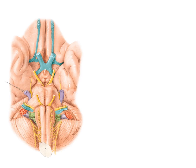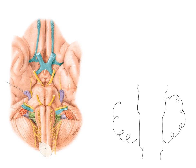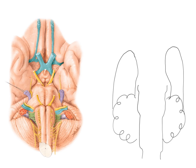The next thing we're going to do is draw a schematic outline of the image on the left to make this more memorable. I'm going to be drawing the spinal cord, the medulla, the pons, and the midbrain. Here is the cerebellum, here are the temporal lobes of the brain, and here are the frontal lobes. This is cartoonish, but we're trying to maintain the anatomical relationships.